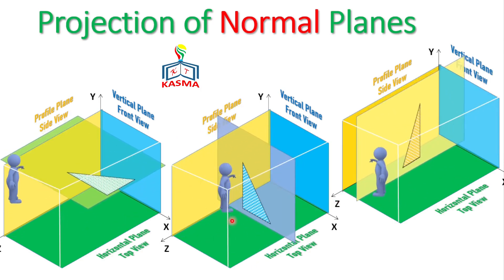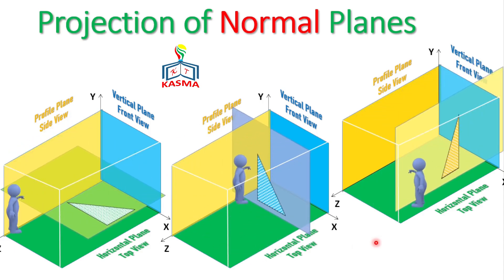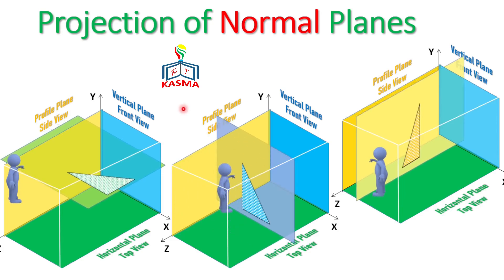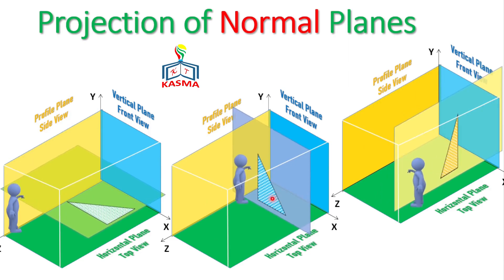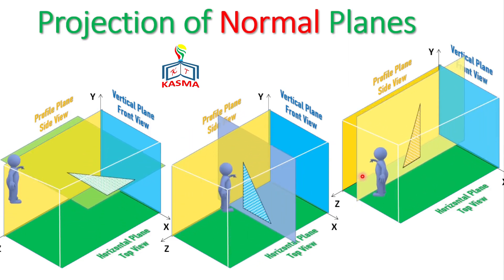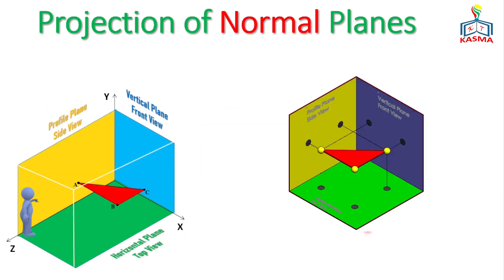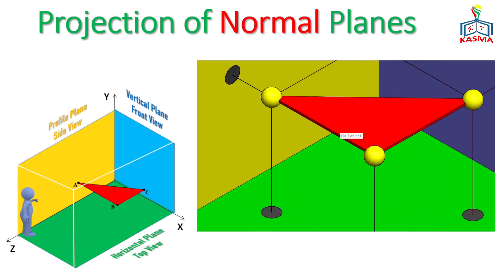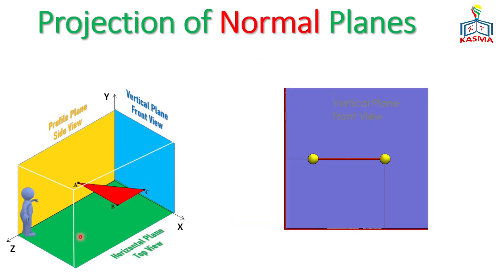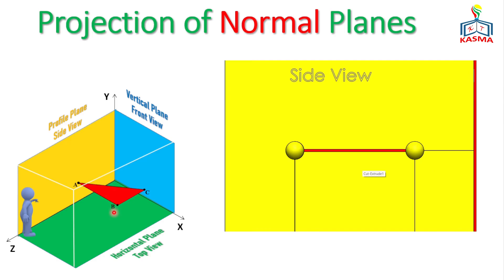Once we understand the definition of a normal plane, we can construct its front view, top view, and side view. It will be very simple — if you've reviewed the videos on projections of lines and projections of points, this will be easy to understand. In this case we have a triangular plane composed of three points: A, B, and C. The projection on the vertical plane gives the front view, on the horizontal plane gives the top view, and on the profile plane gives the side view.